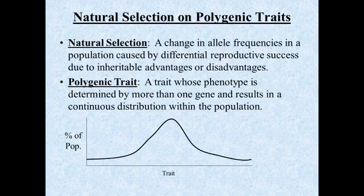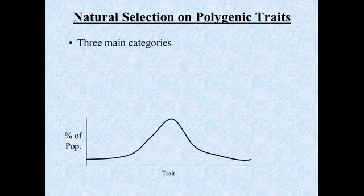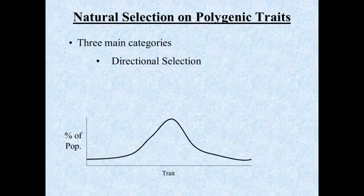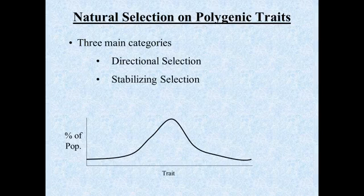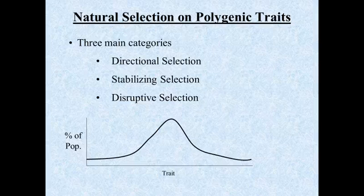Now that we know what natural selection and polygenic traits are, we want to see how those things interact. There are basically three main categories we'll be talking about. The first is directional selection, the next is stabilizing selection, and the last is disruptive selection. All of these have to do with changing the basic shape of this bell-shaped curve.